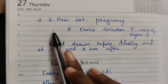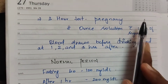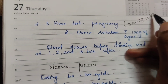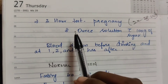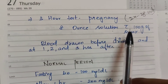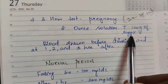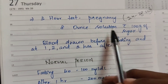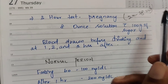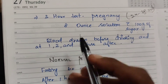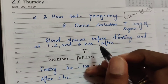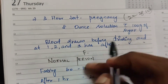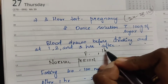The 3-hour test is for pregnant women, typically administered at 24 to 28 weeks of pregnancy. An 8 oz solution with 100 grams of sugar is dissolved. Fasting blood sample is taken first, same as the standard fasting procedure.